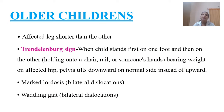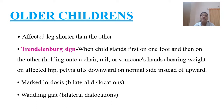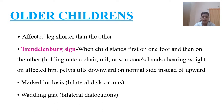In older children, clinical manifestations include the affected leg being shorter than the other. The Trendelenburg sign is observed: when the child stands on the affected leg, the pelvis tilts downward on the normal side instead of upward. The child also shows marked lordosis, and when standing, a waddling gait is present.